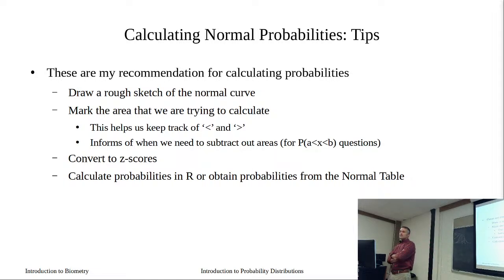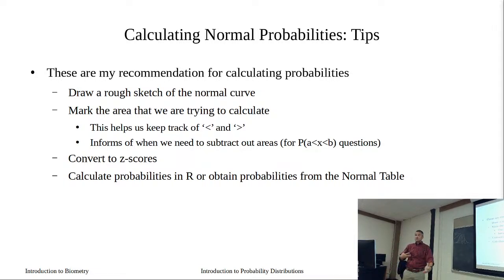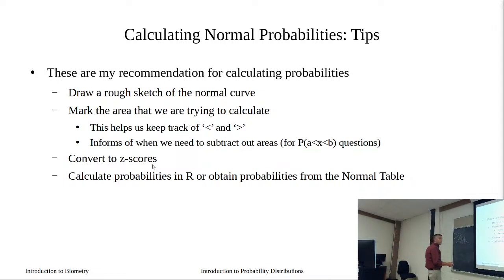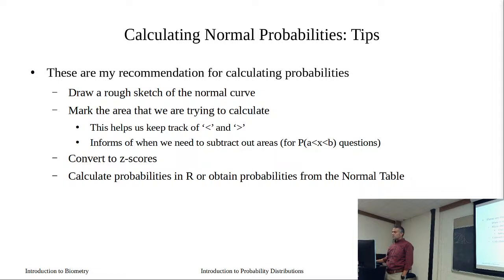If the question asks for the probability of finding an item more than two standard deviations away, that could be on the positive or negative side, so we're looking at two tails. As long as it's symmetric, figure out one tail and multiply by two, or add the areas of both tails. If doing it by hand, convert to a z-score and use the normal table. In R, just use pnorm - don't even calculate the z-score. Give pnorm your x value, the mean, and standard deviation, and specify lower.tail equals TRUE or FALSE.